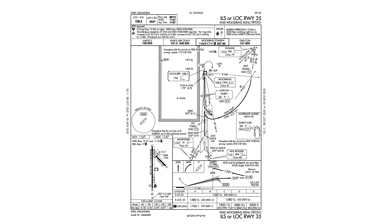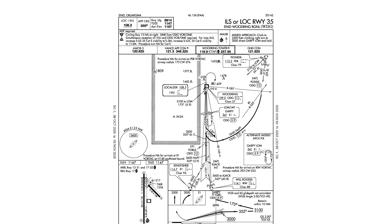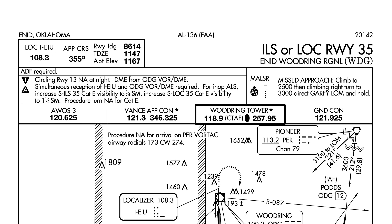Now let's check out the ILS to runway 35 at Enid Woodring Regional. Notice that in the frequency box we have 108.3, but instead of saying LOC/DME, it just says LOC. Additionally, there is no TACAN channel written below the frequency. We are definitely going to have to DME hold if we want distance information on this approach.